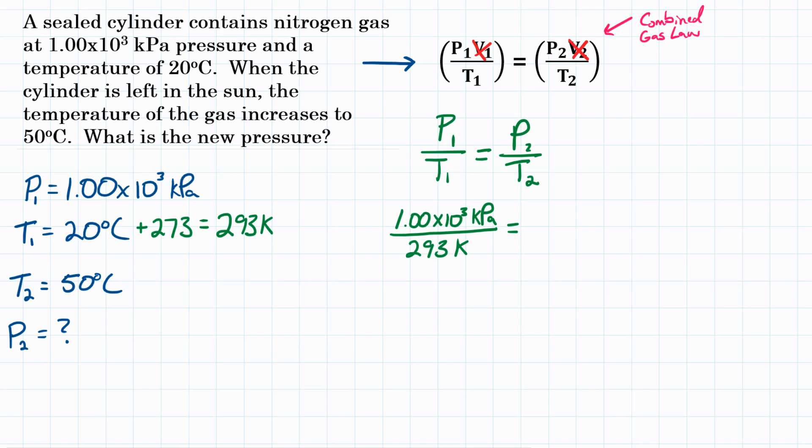And then on the other side, we have P2 up top. Well, that is what we are solving for. So you can just leave that as P2 or X or whatever. And then on bottom T2 is 50 degrees Celsius. But again, we have to convert that to Kelvin. So plus 273 gives us 323 Kelvin. And that goes on the bottom.